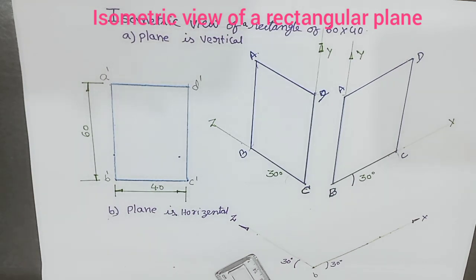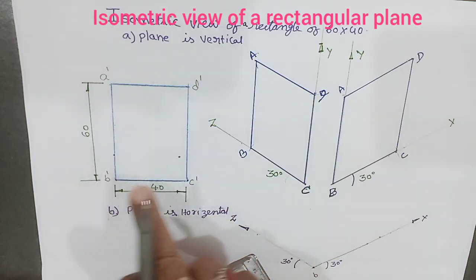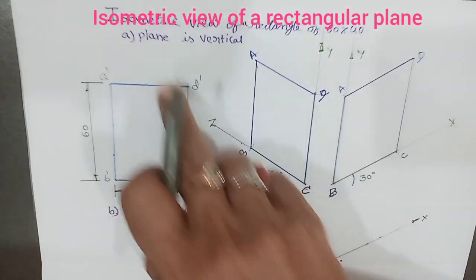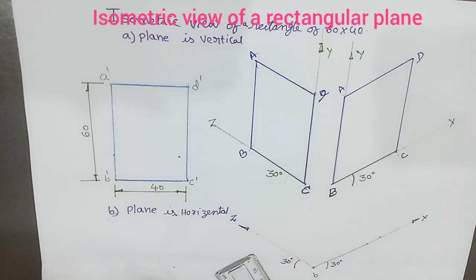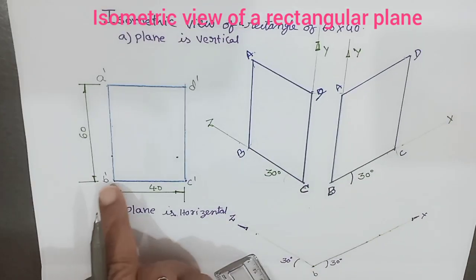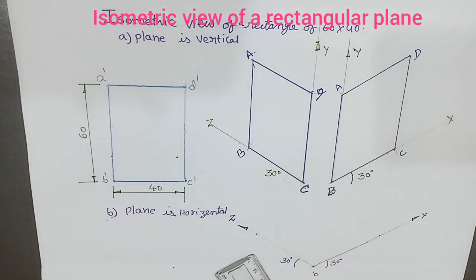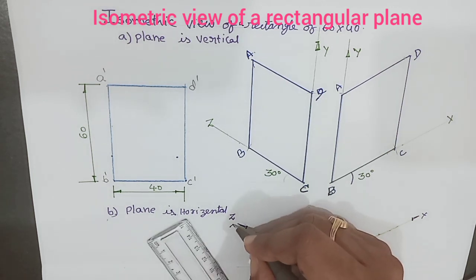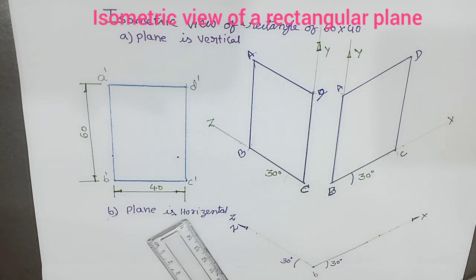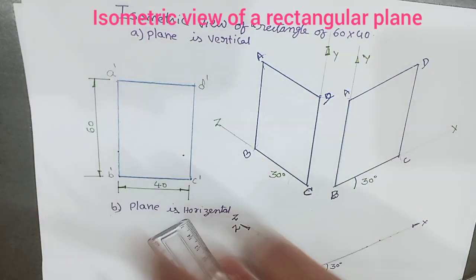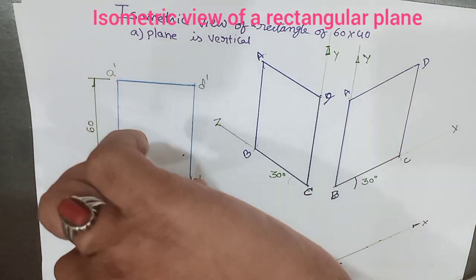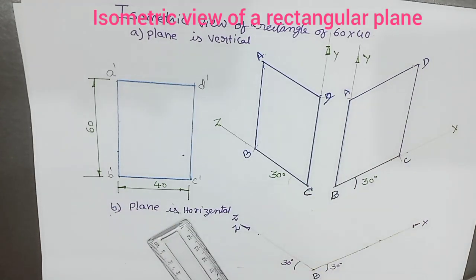When the plane is horizontal, this rectangular plane — the front view is already completed and now we are going towards the top view. If the plane is parallel to the horizontal plane, then all four sides are parallel to the horizontal plane, meaning all four sides need to make an angle of 30 degrees to the XY line or ground line. This is the Z axis and this is the X axis. B as a center, BA as radius, draw an arc on the Z axis, and B as a center, BC as radius, draw an arc on the X axis.